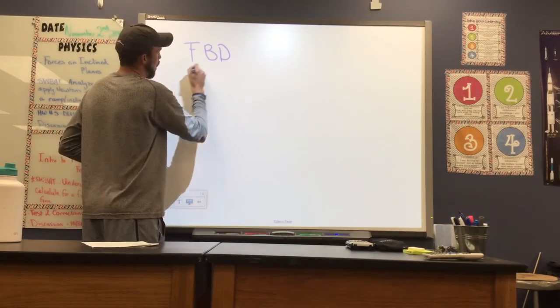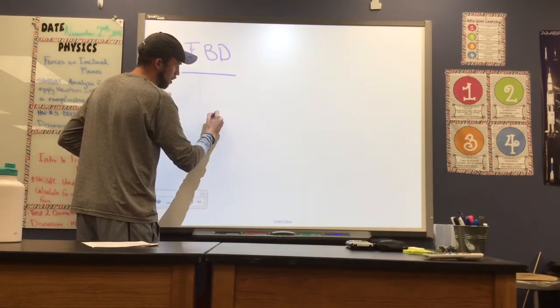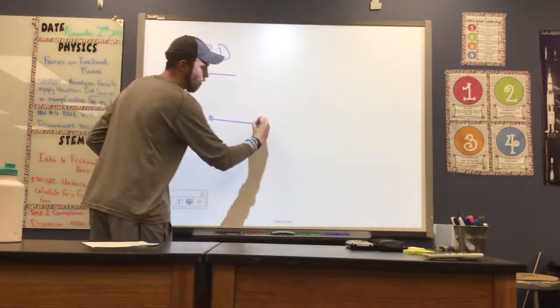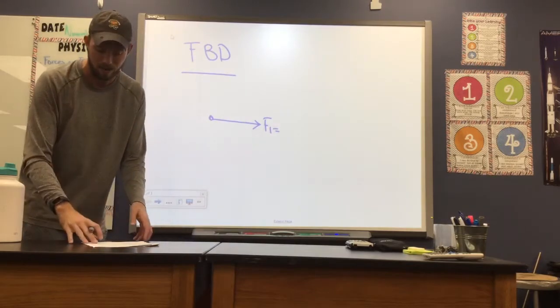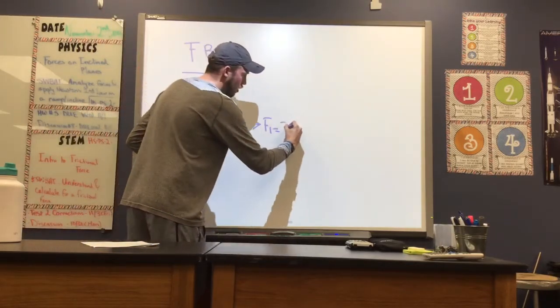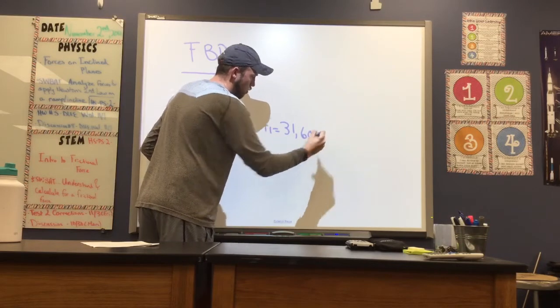So our free body diagram - we're told we have a force due east. I'm going to call this F1 just as a way to keep track of the two forces we have here. And we're told this force is 31,600 Newtons.